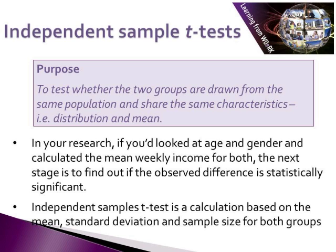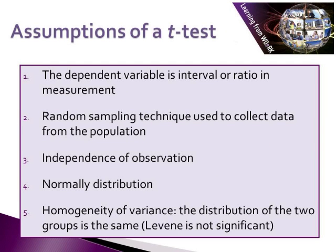By t-test here, we're not referring to the t-test we looked at before — we're actually looking at what we call the independent sample t-test. The assumptions behind an independent sample t-test — there are five. The first is that the dependent variable is interval or ratio in measurement. The second is that random sampling techniques have been used to collect the data from the population. The third is that there is independence in the observation — it is assumed that the response made by a participant is not influenced by other participants. The fourth is the rule of normal distribution: it is assumed that the populations from which the samples are drawn are normally distributed.